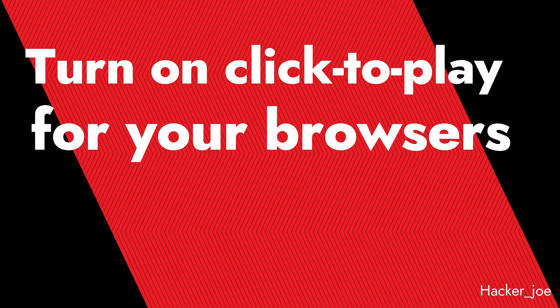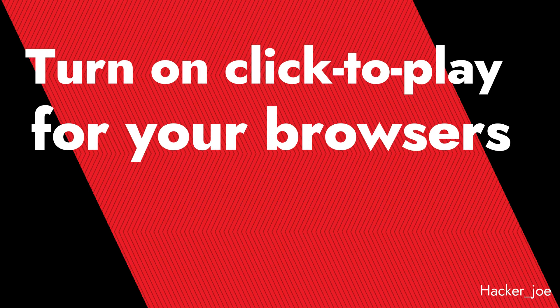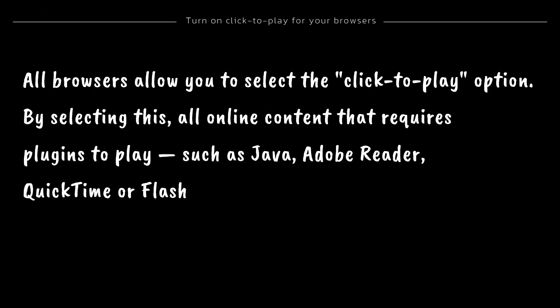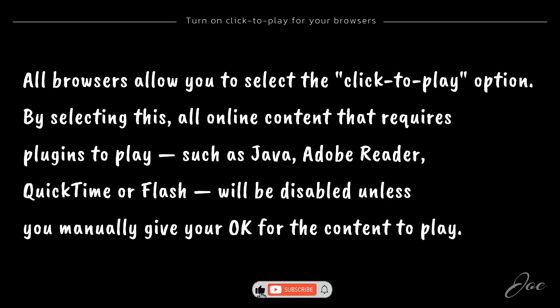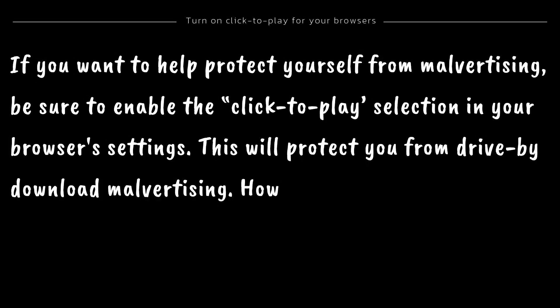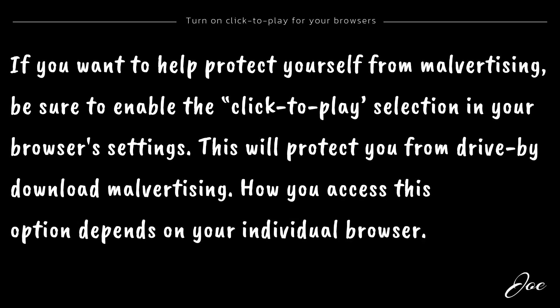The second is to turn on click-to-play for your browsers. All browsers allow you to select the click-to-play option. By selecting this, all online content that requires plugins to play — such as Java, Adobe Reader, QuickTime, or Flash — will be disabled unless you manually give your OK for the content to play. If you want to help protect yourself from malvertising, be sure to enable the click-to-play selection in your browser's settings. This will protect you from drive-by download malvertising.